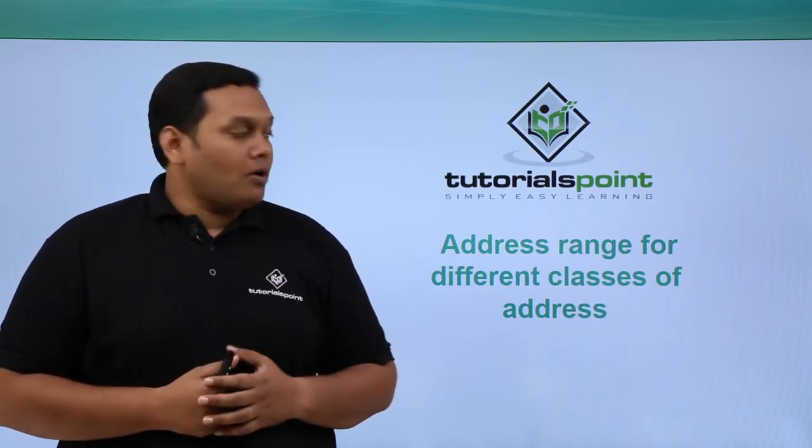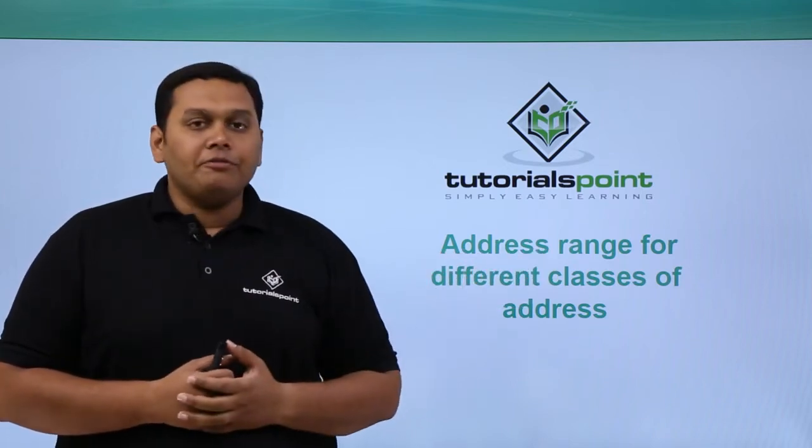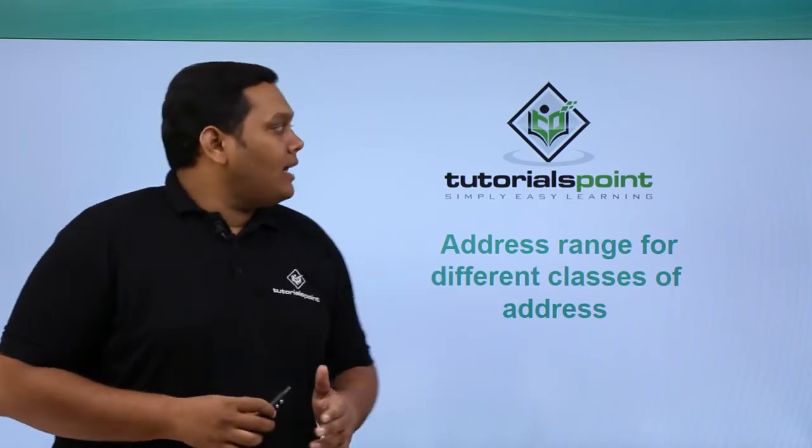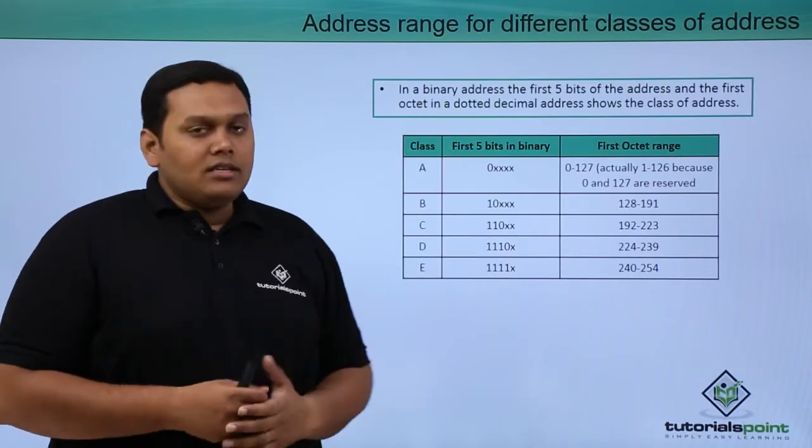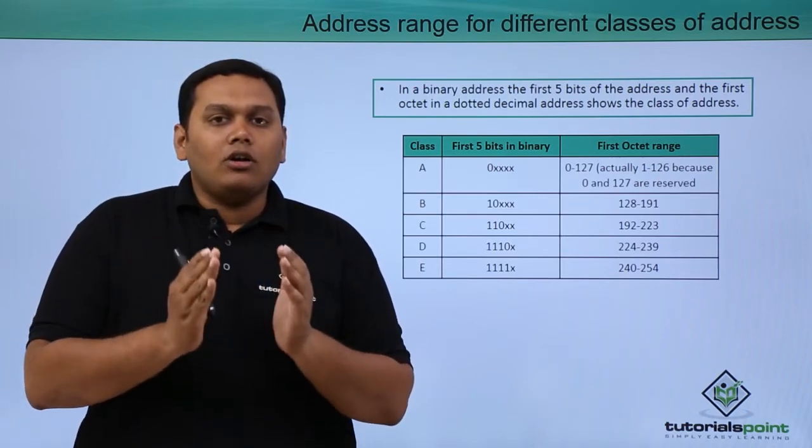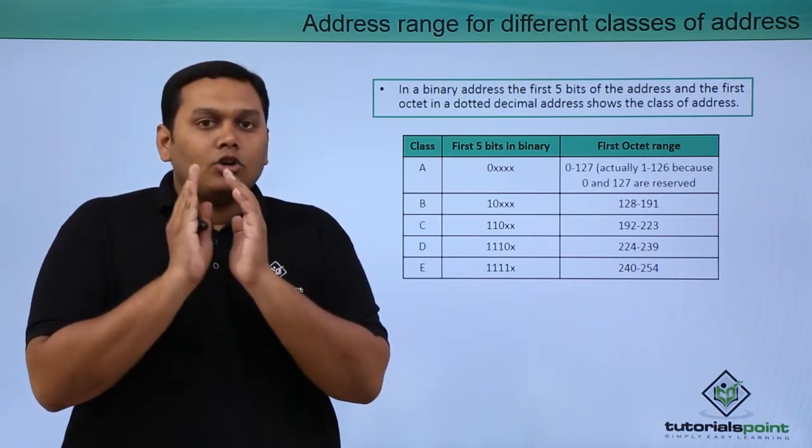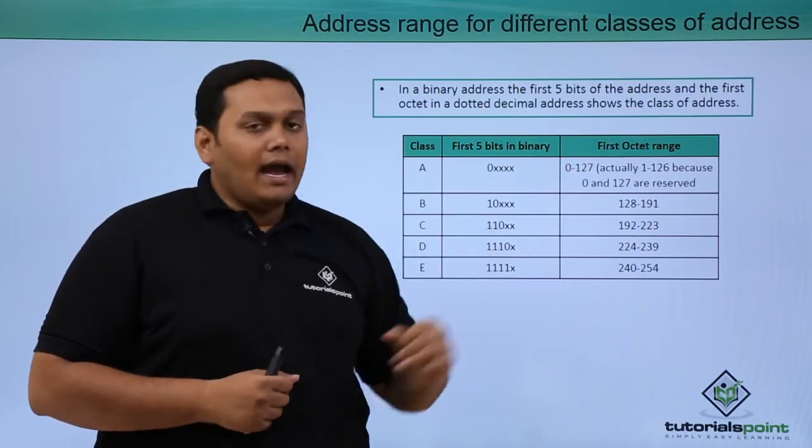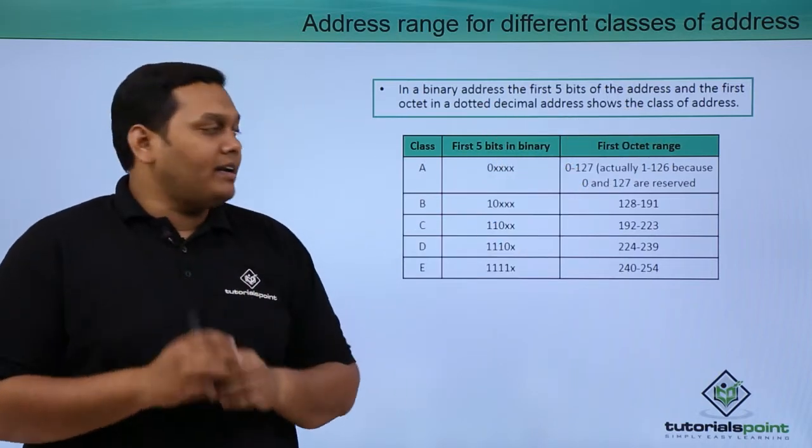In this video we are going to discuss the address range for different classes of addresses. You can see here that in a binary address, the first 5 bits or the octet decimal dotted value shows the class of the address. So how are they divided?